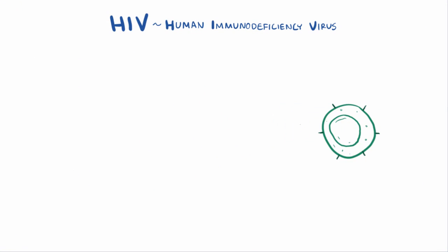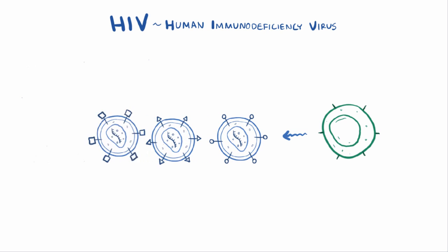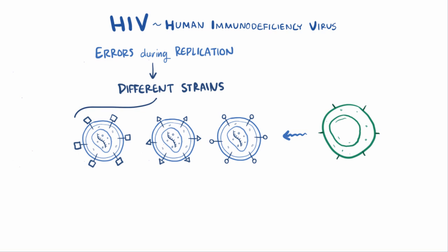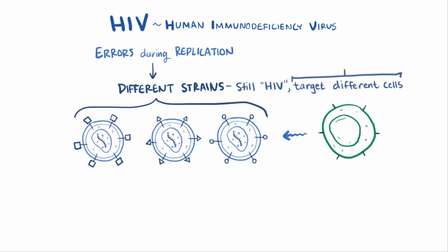One thing to know is that HIV is notorious for making errors when it replicates, and during infection it can mutate to create slightly different strains of viruses. These viruses are all still considered HIV, but they behave slightly differently from each other and target different cells in the host. That host cell preference is called viral tropism.